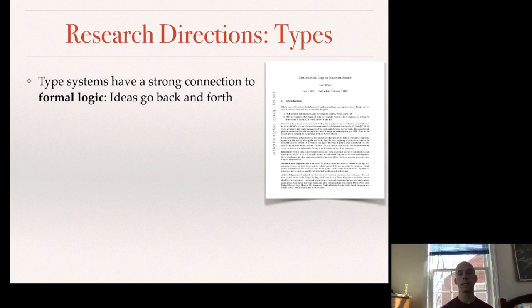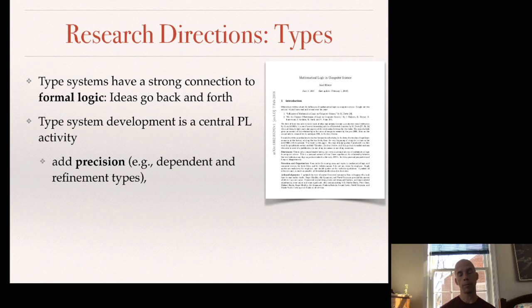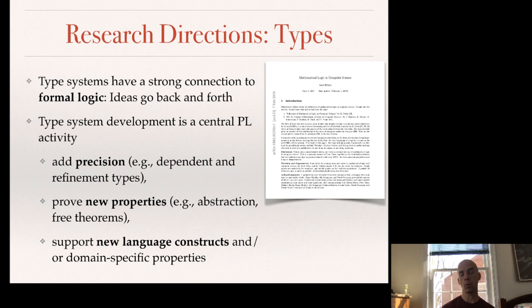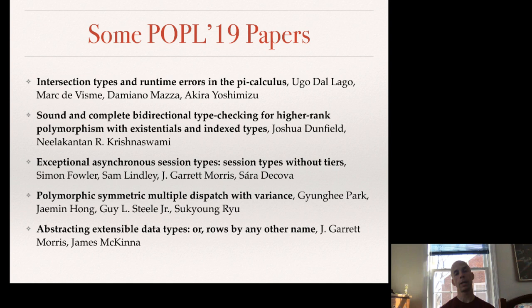There's lots of research going on in type systems. The core idea is pretty well defined, and what's of most interest is new type systems for new properties or new algorithms. Type systems have a strong connection to logic, so one common thing is to draw ideas from logic or connect type systems back to logic. People also look to develop type systems with additional precision to prove new properties or support new language constructs. At POPL-19, several papers involved type system work as their central idea — and actually types appear as part of many more papers beyond those.